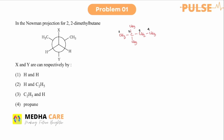As you already know, in a Newman projection the front carbon is represented by a dot and the rear side carbon is represented by a circle. So you can see the rear side carbon already contains two methyl groups.